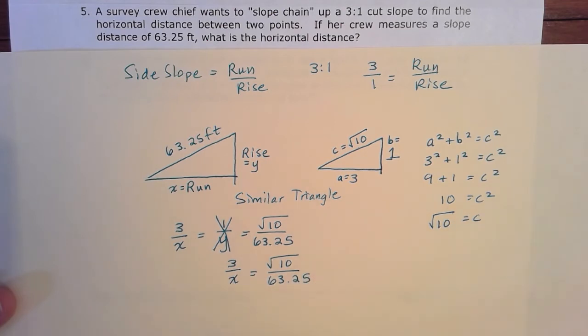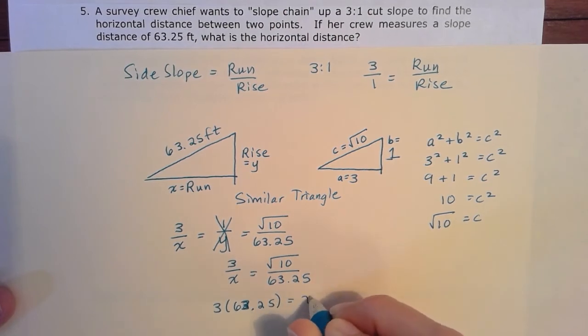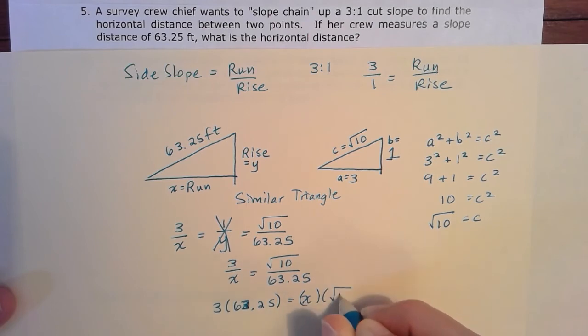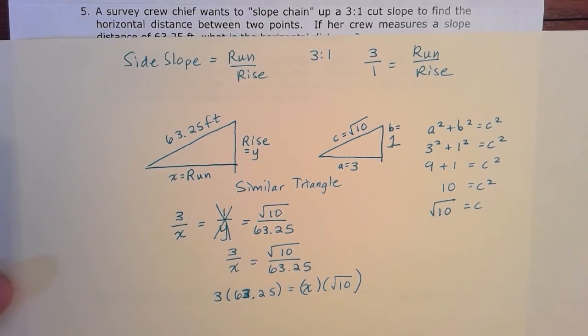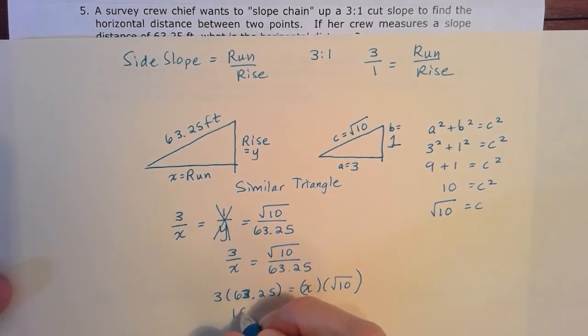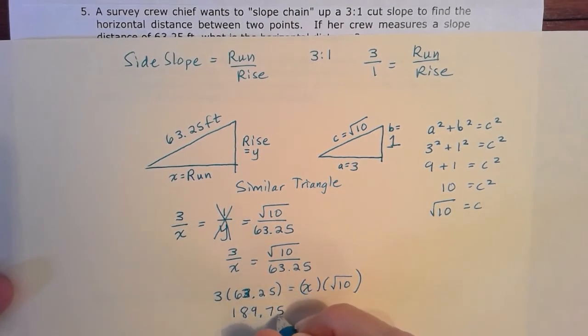I'm just going to go ahead and cross multiply those. So I get three times 63.25 is equal to X times the square root of ten. And if I multiply that out, three times 63.25 is going to give me 189.75 is going to be equal to X times the square root of ten. But we'll just divide that square root of ten by both sides.